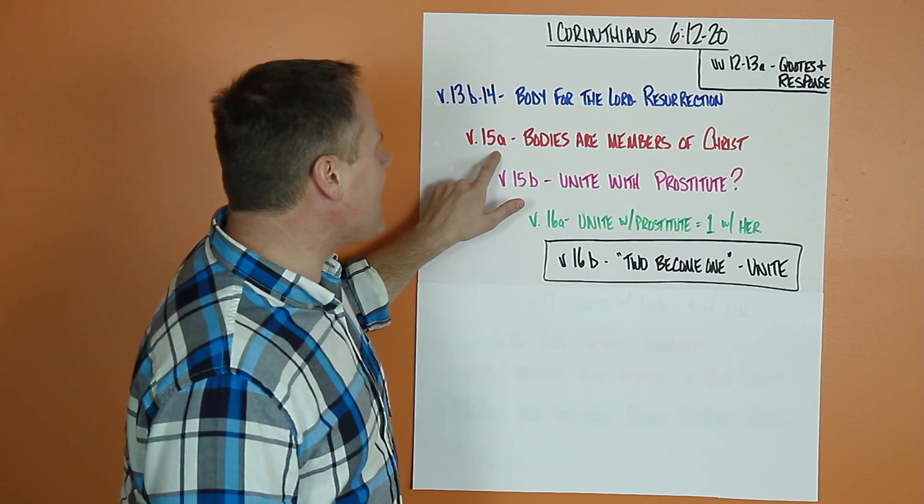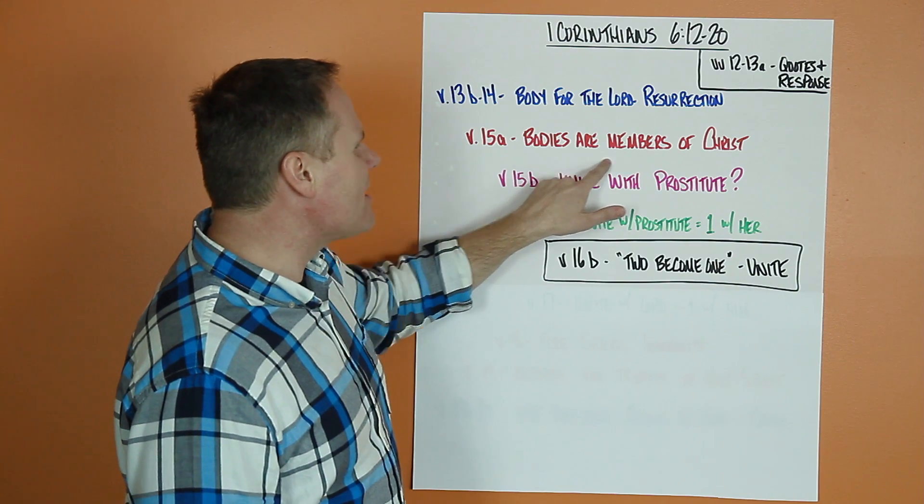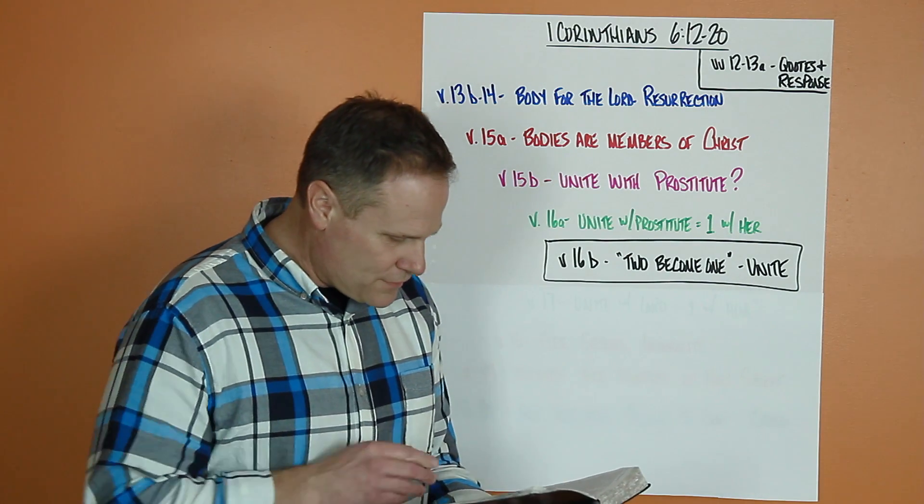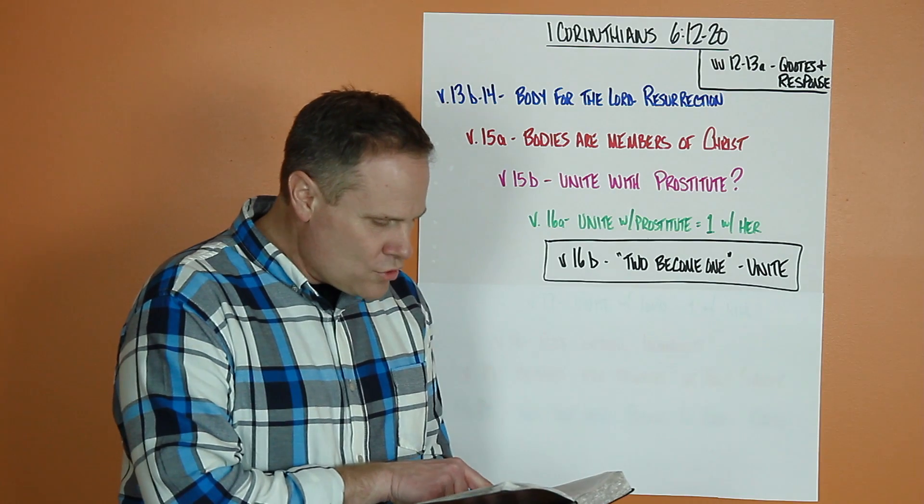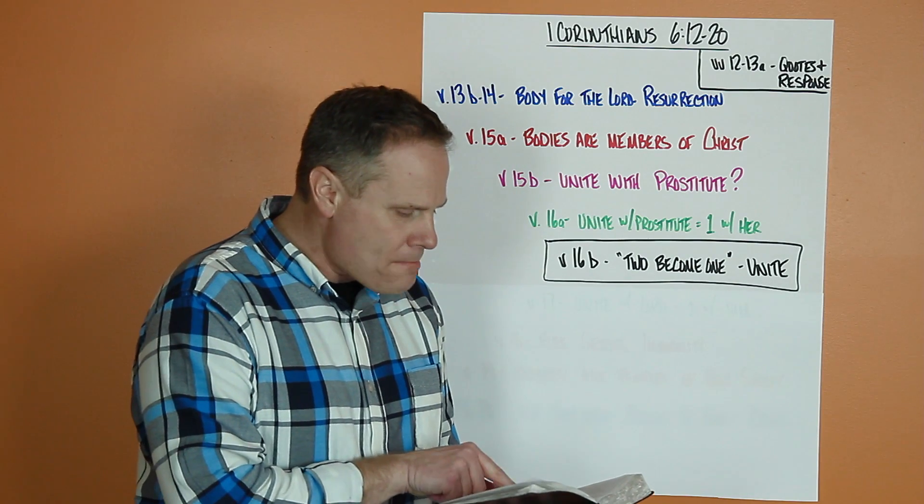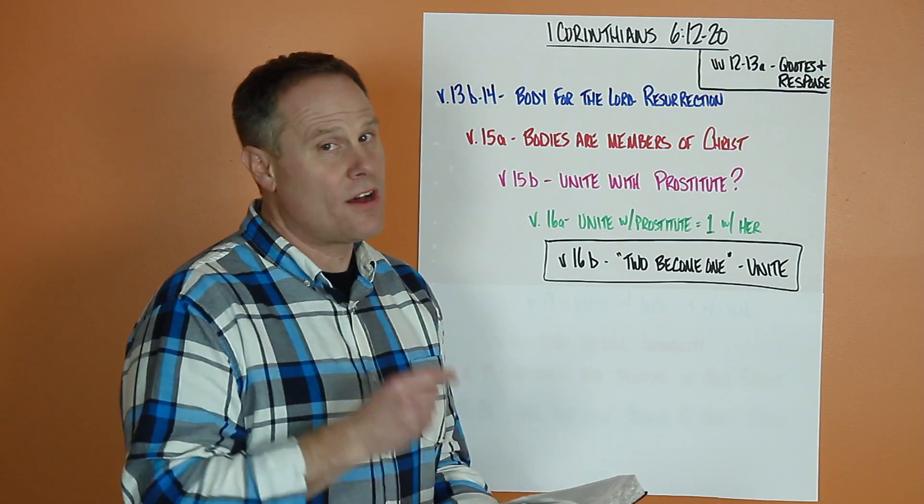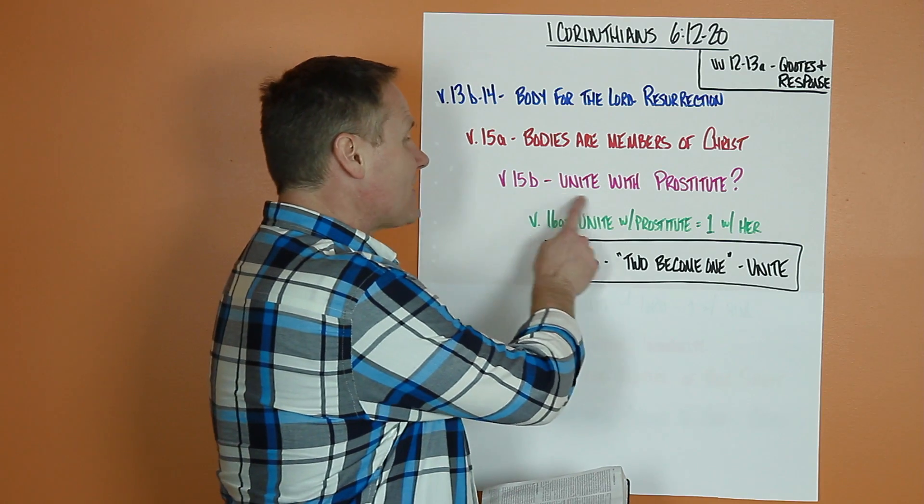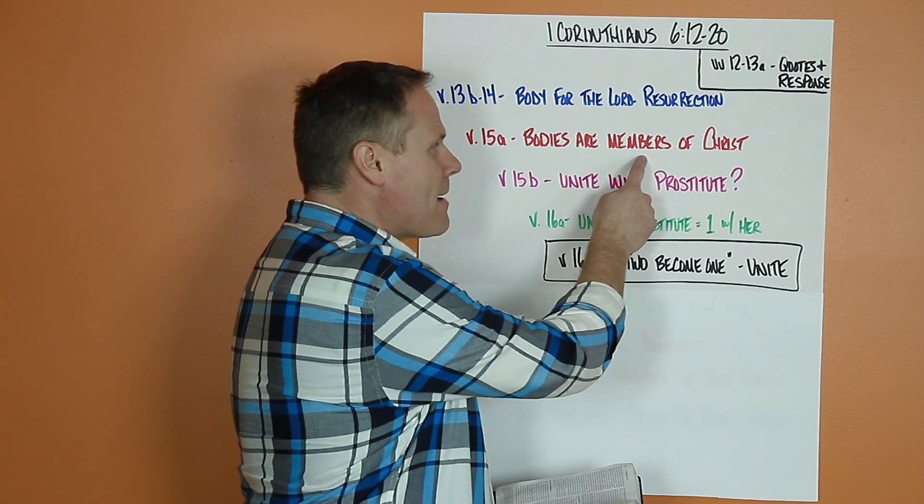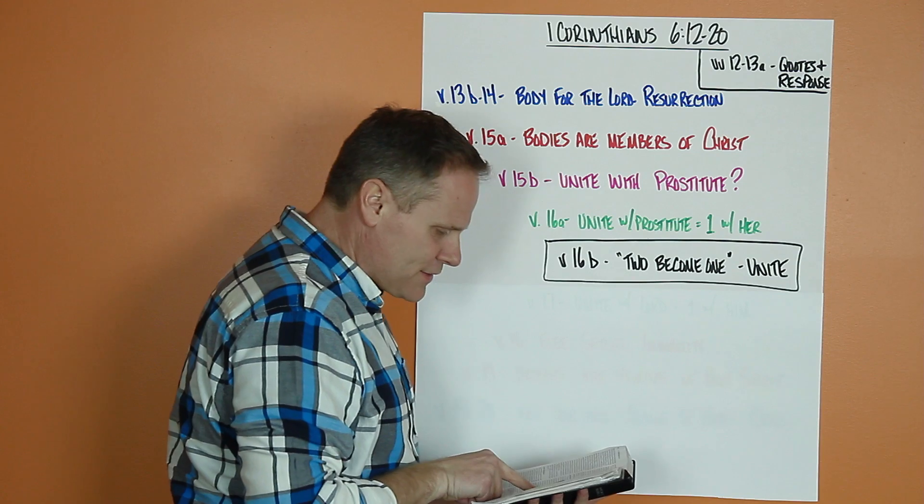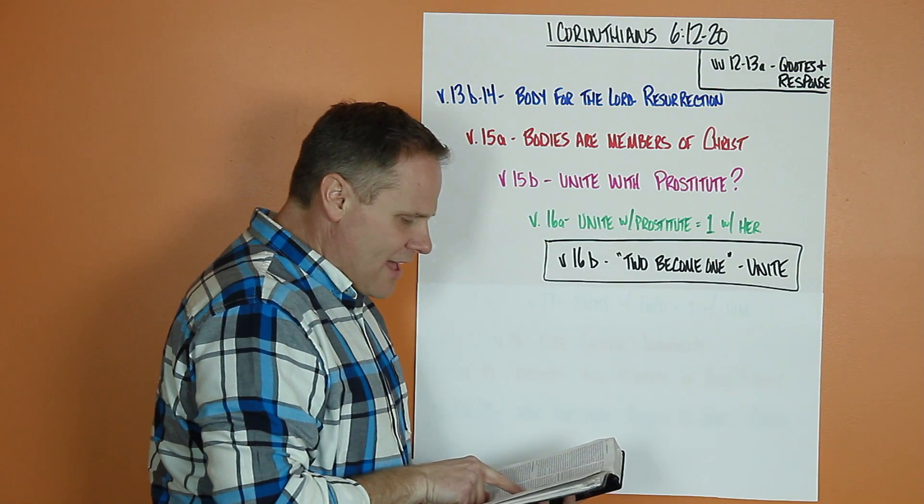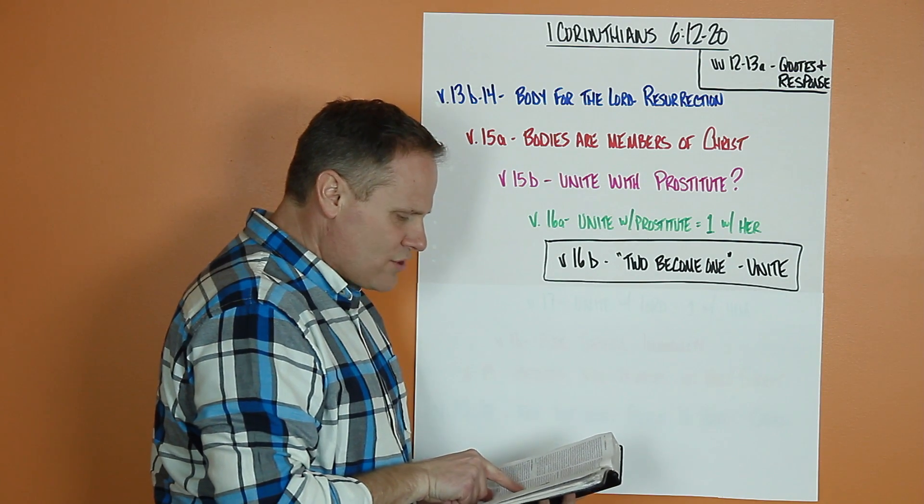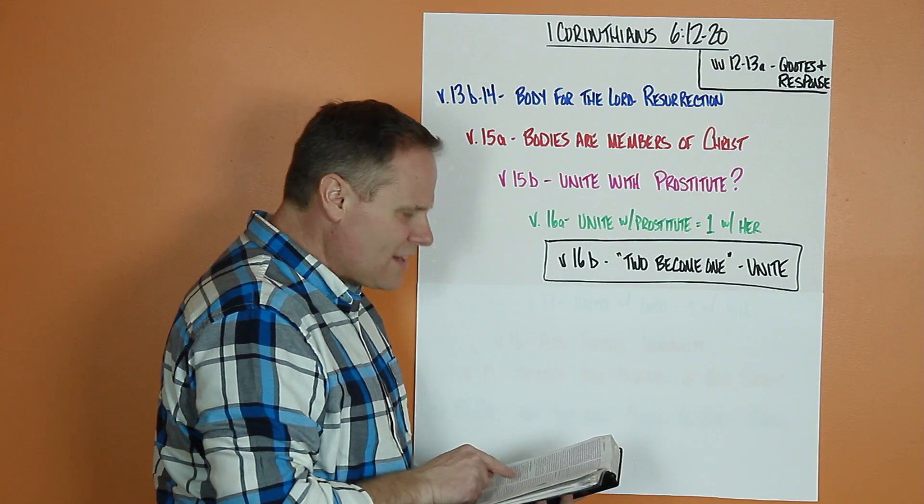Then in 15a, he introduces this idea that bodies are actually members of Christ. Verse 15: do you not know that your bodies are members of Christ himself? A strong point. And then he talks about, are you going to unite that member of Christ with a prostitute? Shall I then take the member of Christ and unite them with a prostitute? Never.